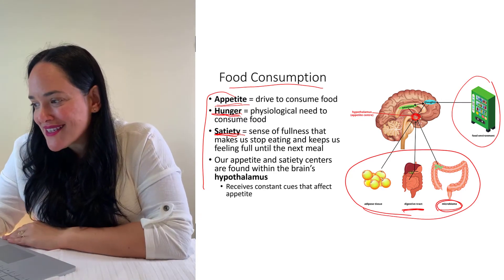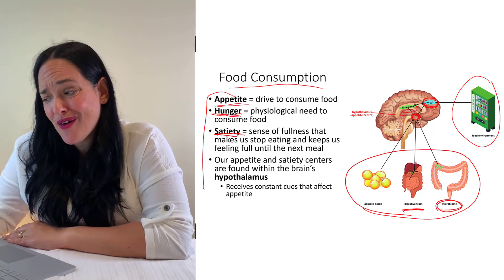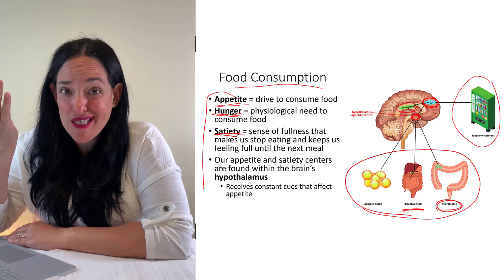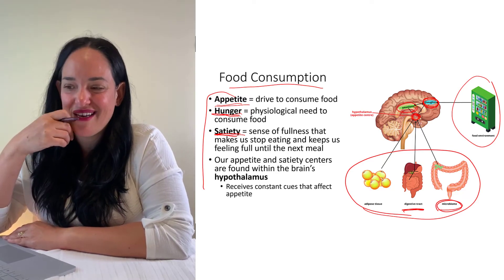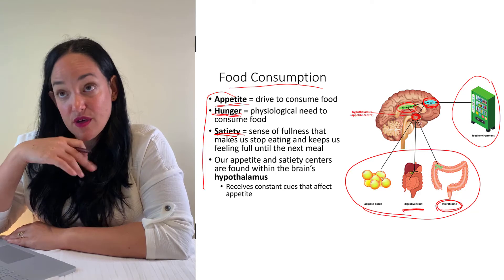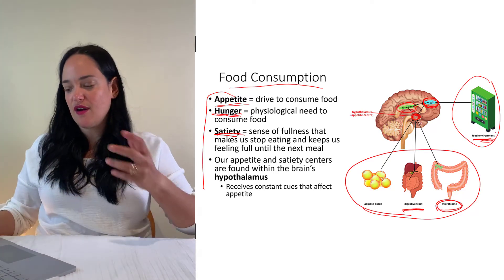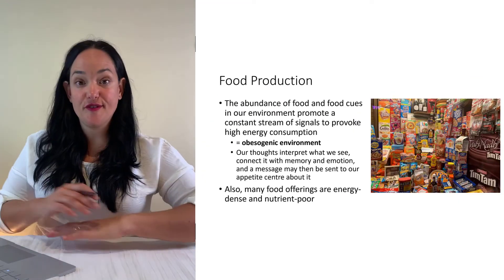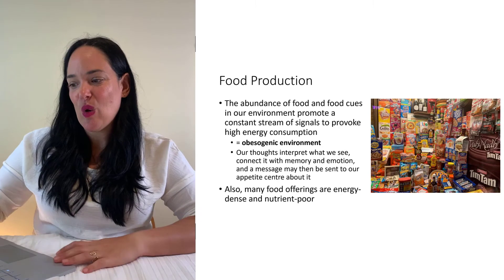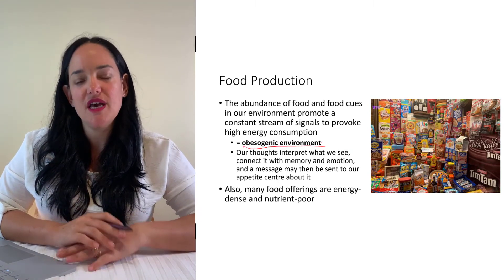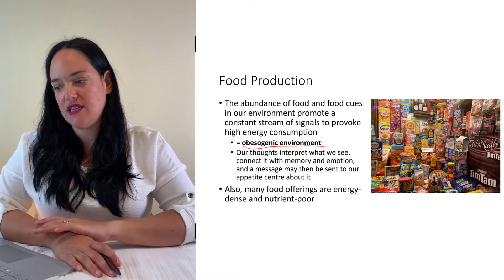Other things that affect appetite include our thoughts — how we feel about food — and our emotions. We've all eaten sometimes because we're sad, since food provides a reward signal to the brain. That's why regulating our emotions is so important, not only for overall well-being but also for appetite control. Our food environment is often influencing food consumption too, with one big message: eat all the time. We call this the obesogenic environment — one that really promotes eating and often limits physical activity.